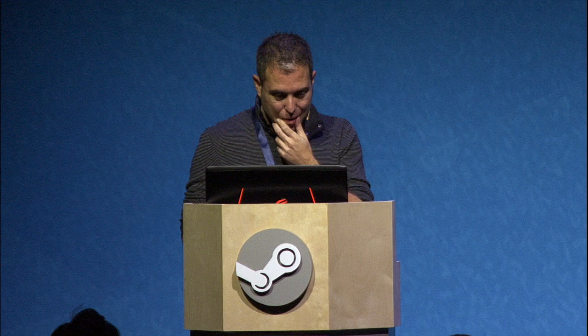The implications are that very salient objects can be hidden in plain sight. If you understand the attentional goals of your player, you can create surprises when attention is focused elsewhere. Conversely, don't be surprised when players miss very obvious things — understand what attentional goals you're priming, and consider whether the cues you're giving players are guiding them to miss something. If they're focused on attacking an enemy, they're not going to be focused on looking for cues to an exit. Think about the goals you're priming, and make use of this to create compelling and novel surprising experiences.